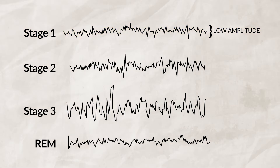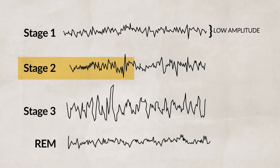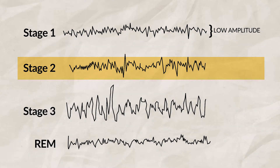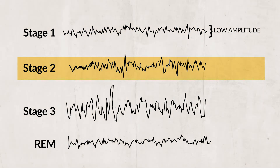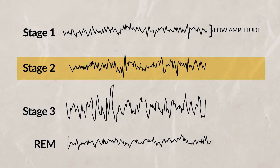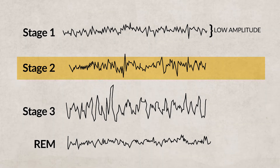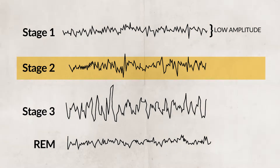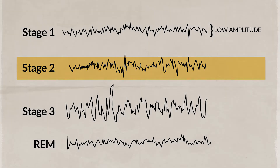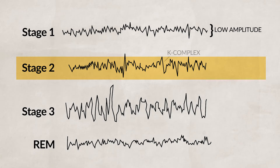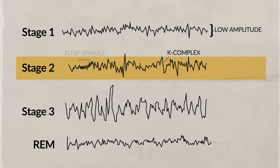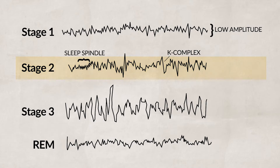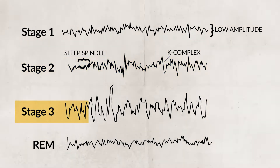Moving from non-REM Stage 1 to non-REM Stage 2, we have a transitional stage that normally lasts around 10–20 minutes. You are no longer easily woken during this stage, and your brain starts to emit theta waves. This stage is characterized by the occurrence of K-complexes and sleep spindles, which are bursts of neural activity.